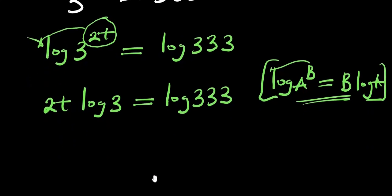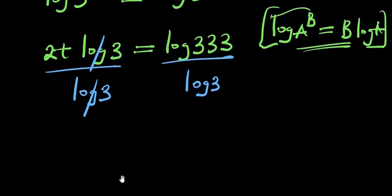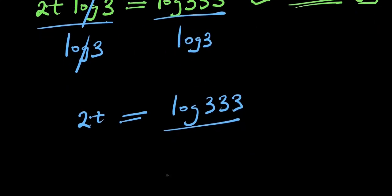From here we divide each part of the equation by log(3). The log(3) on the left cancels, giving us 2t = log(333) / log(3).